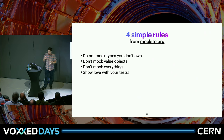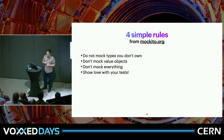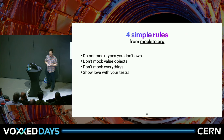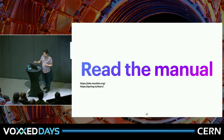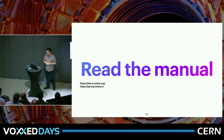Coming to the end, this is from the Mockito website — four simple rules. Don't mock value objects, or don't mock everything: if the class you're using is easier to use than it is to mock, just use that class. Show love with your tests — you have the opportunity to tell a real true story about your code, so make it readable and understandable so developers can quickly get up to speed. And finally, read the manual. Everything I've talked about here is from the Mockito.org website and from the Spring website. Read the Java docs as well — they're really good. And read through the exception messages that come from Mockito, because they try to give you as much information as possible about how to fix the issue.